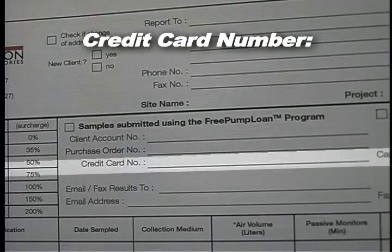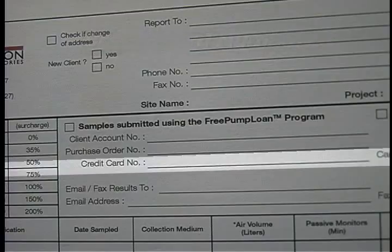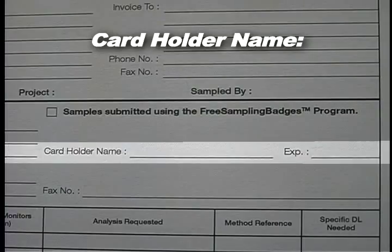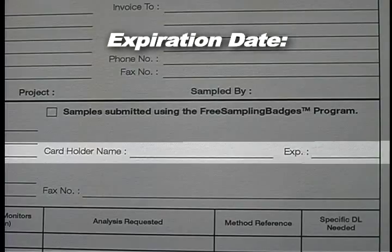Credit Card Number: If you are paying by credit card, please clearly print your credit card number in the space provided. If you prefer that your credit card information not appear here, please write 'On File' and communicate this to client services via email or phone. Card Holder Name: If you are paying by credit card, please clearly print the cardholder's name as it appears on the card. Expiration: Please clearly print the expiration date of the card as it appears on the card in the space provided.